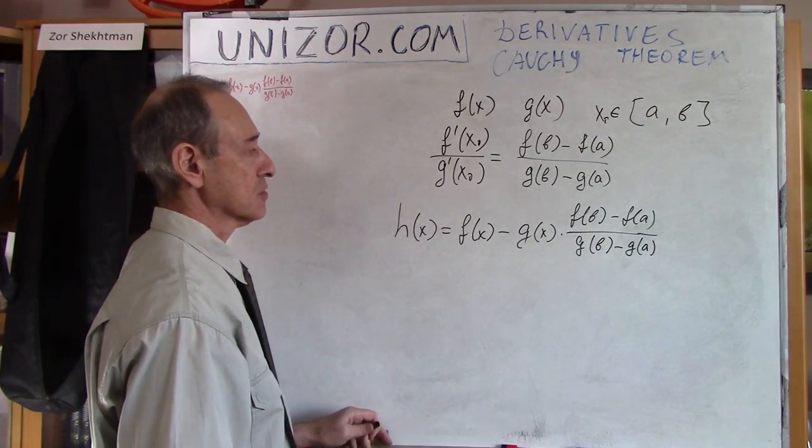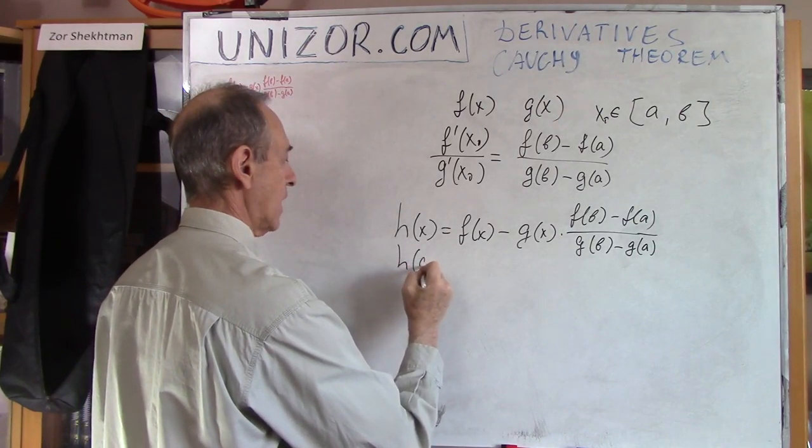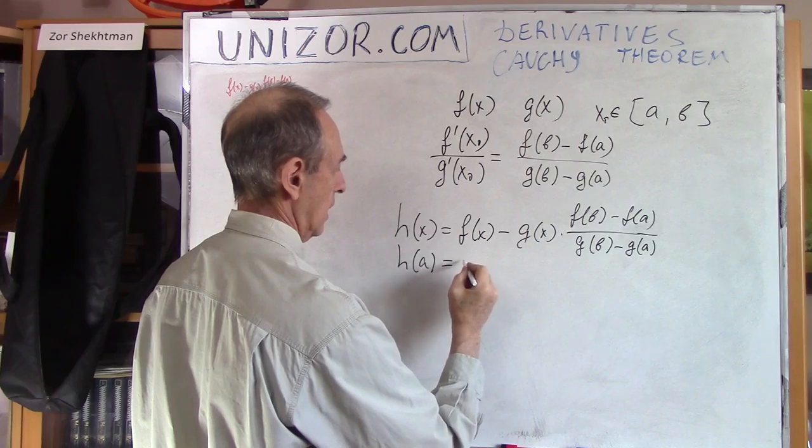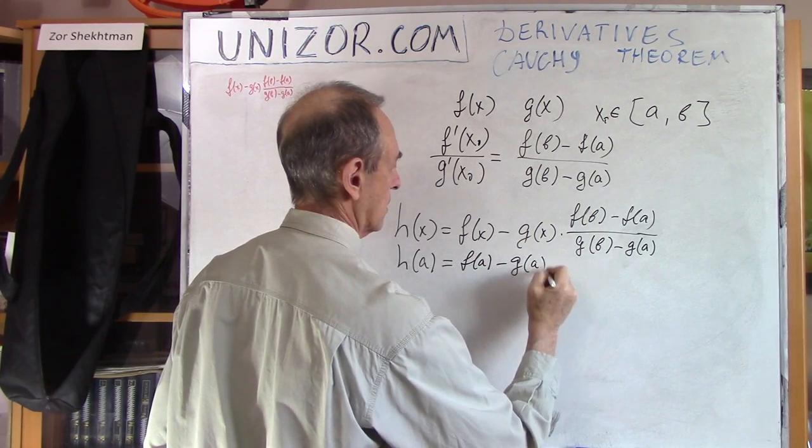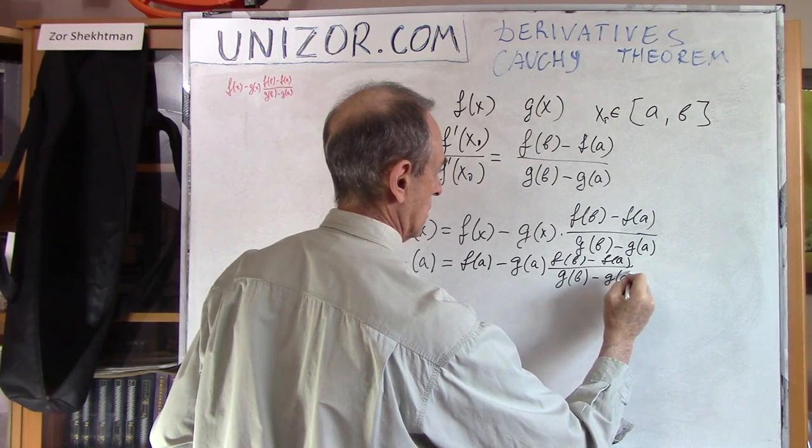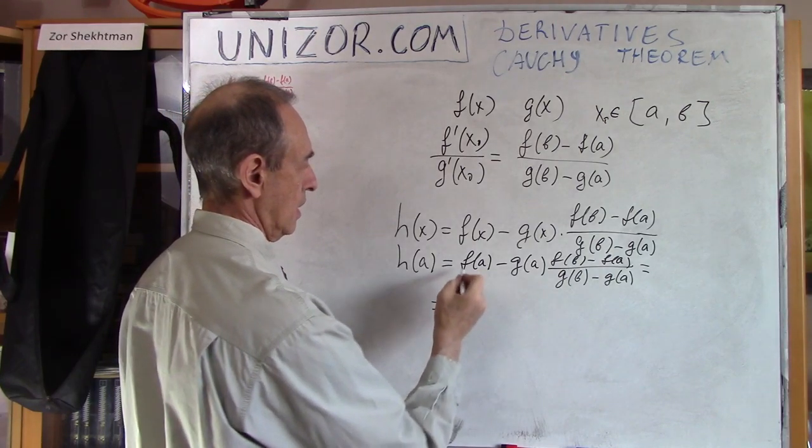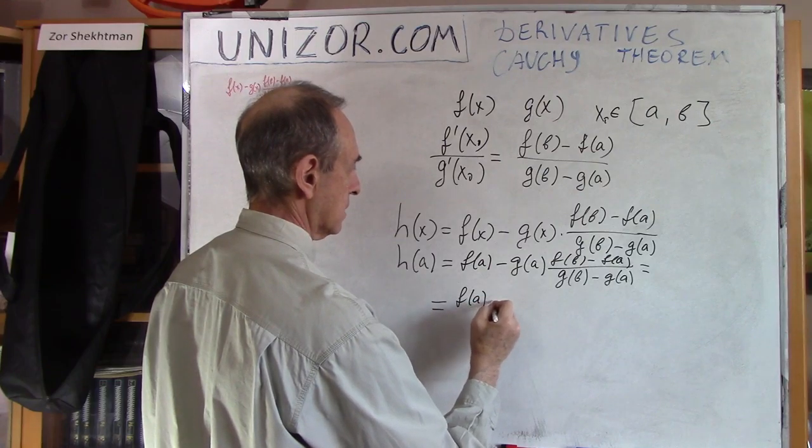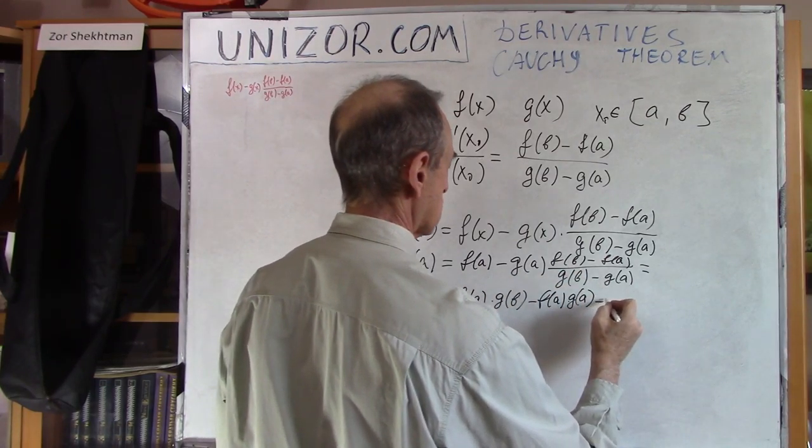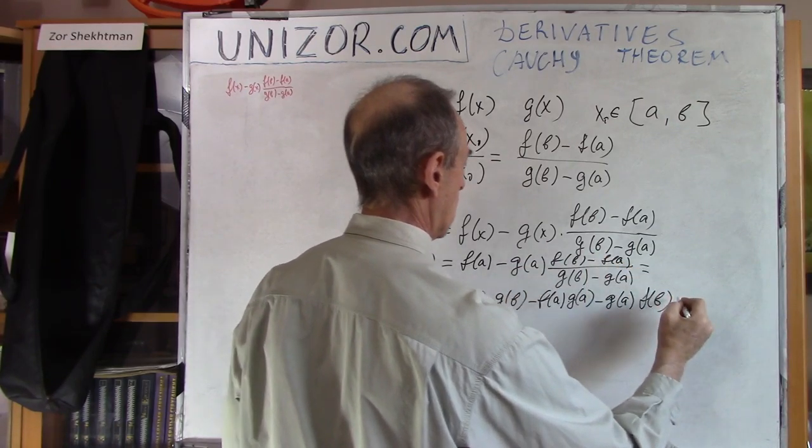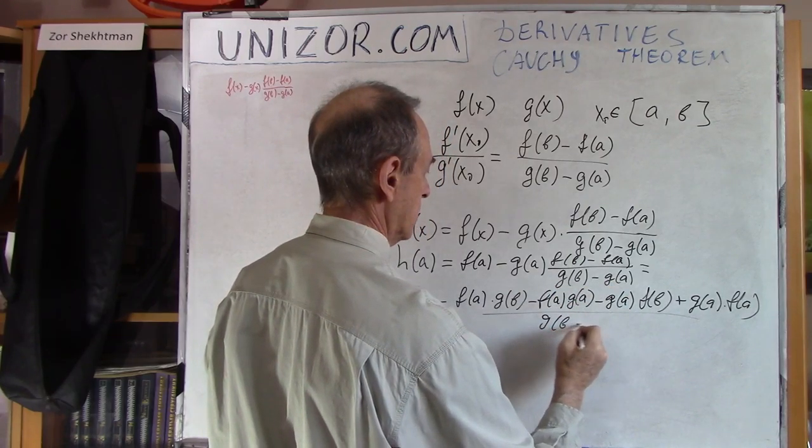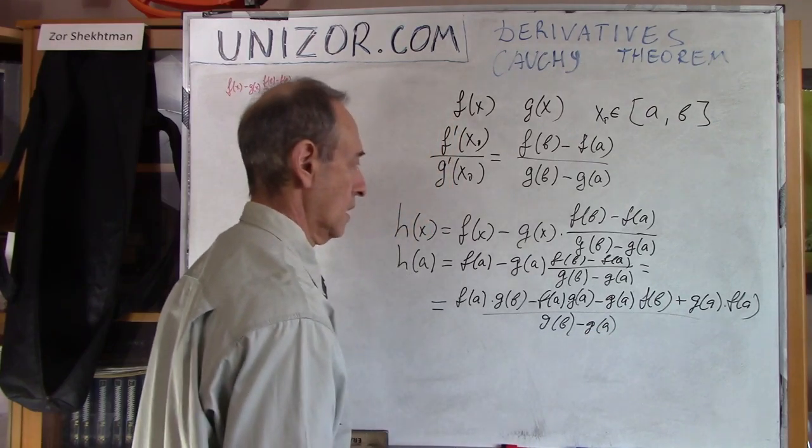So what's my auxiliary function? H of x is equal to f of x minus g of x times this ratio. Now, why does this function satisfy the conditions of Rolle's theorem? Well, let's check the value of this function at both ends. At a, I have f of a minus g of a times this ratio. Let's go to the common denominator. It's f of a times g of b minus f of a g of a minus g of a f of b plus g of a f of a, divided by g of b minus g of a.